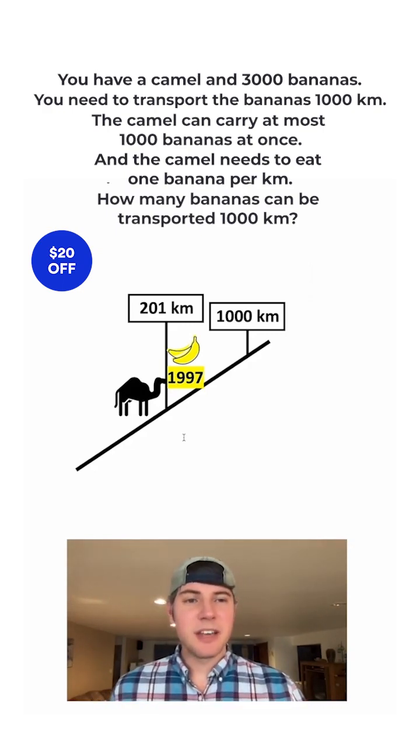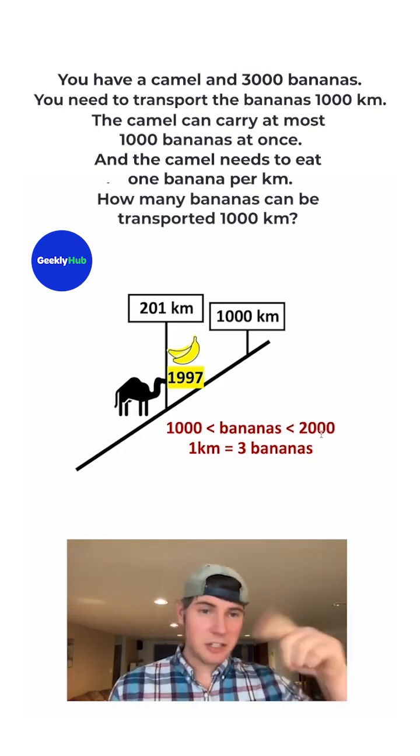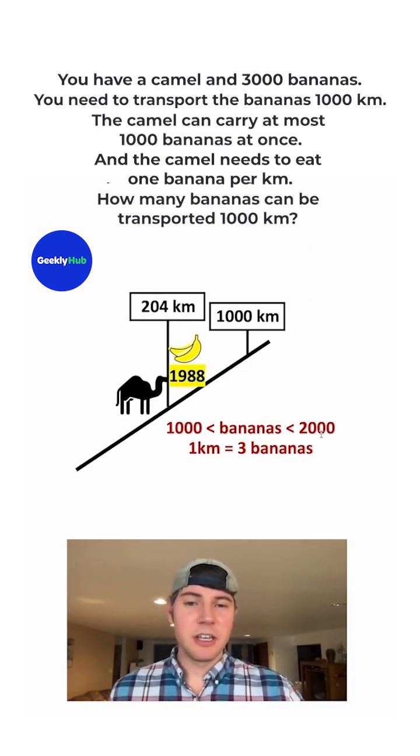You'll notice it'll end up taking away three bananas to do this. So we can say that this camel, to move 1,000 to 2,000 bananas, it takes three bananas per kilometer doing this loop method. And as we keep traveling along, this is going to keep reducing by three.